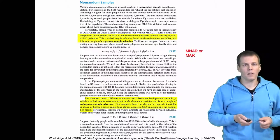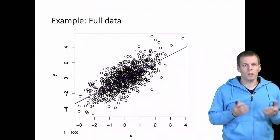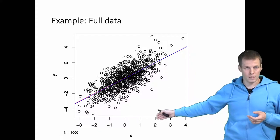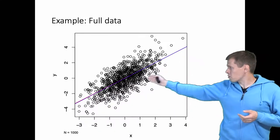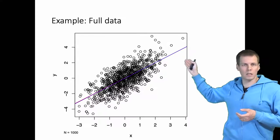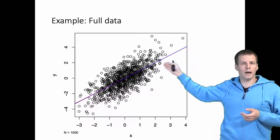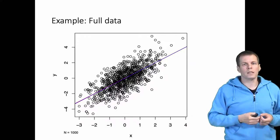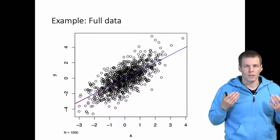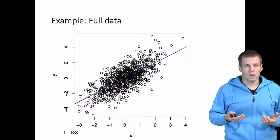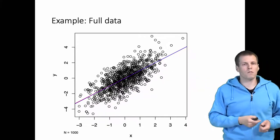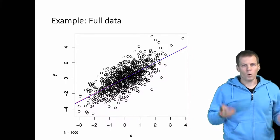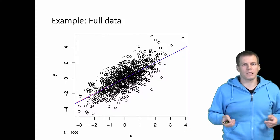Let's take a look at an example of how this works. This is our full data — we have 1,000 observations of x and y. Y is the dependent variable, x is the independent variable. We have two regression lines here: the red line is the population regression line with a slope of 1, and the other is the estimated regression line from this sample of 1,000. The lines overlap almost perfectly because regression is very precise with such large sample sizes.